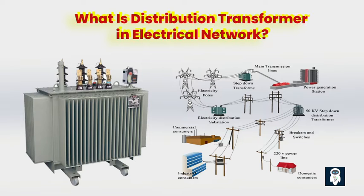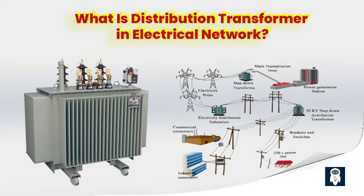Distribution transformers are very important for getting electricity from the grid to people who need it safely and efficiently. These important devices lower the voltage to a level that can be used, making sure that the electricity source is safe and reliable. This video goes into detail about distribution transformers, including their parts, how they work, the different kinds, how to install and maintain them, and how important they are to power distribution systems. We will also talk about the importance of saving energy and making power transformers more efficient.